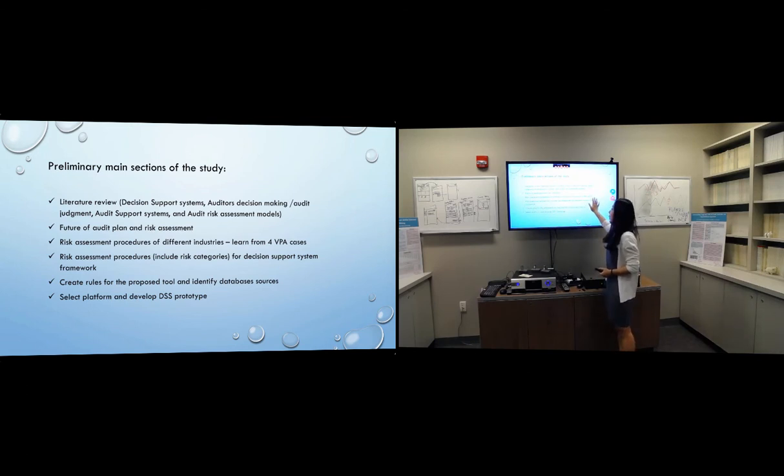And then I will discuss the audit risk assessment procedures of different industries learned from the four verbal protocol analysis cases we have. And then based on the VPA results and based on PCAOB audit standards, I will create the risk assessment procedures for the decision support system. So this will include all the processes, all the procedures that auditors can use step by step.